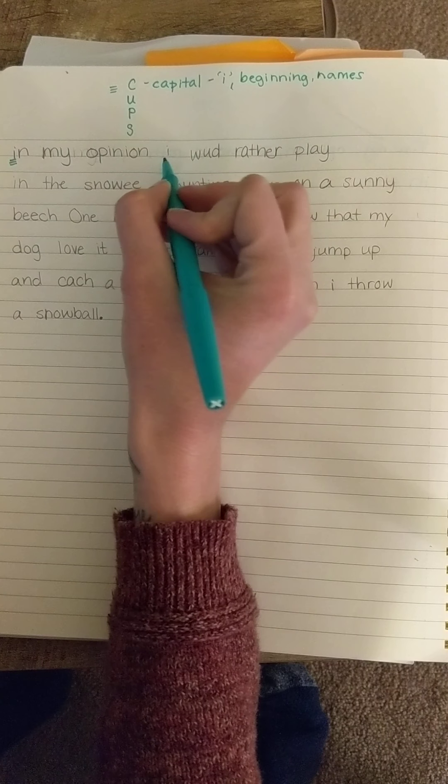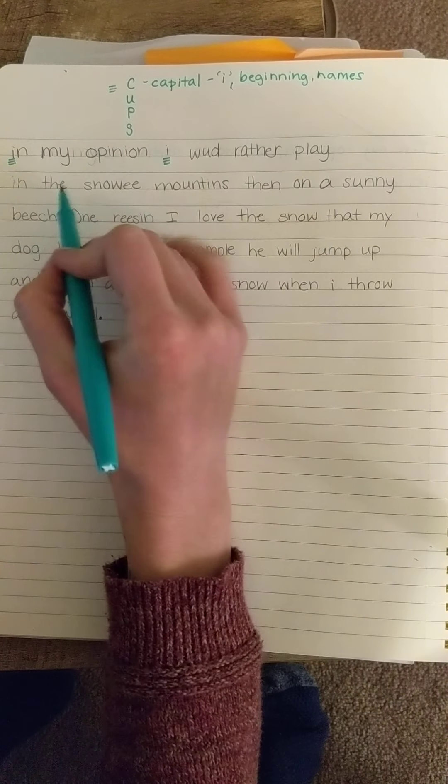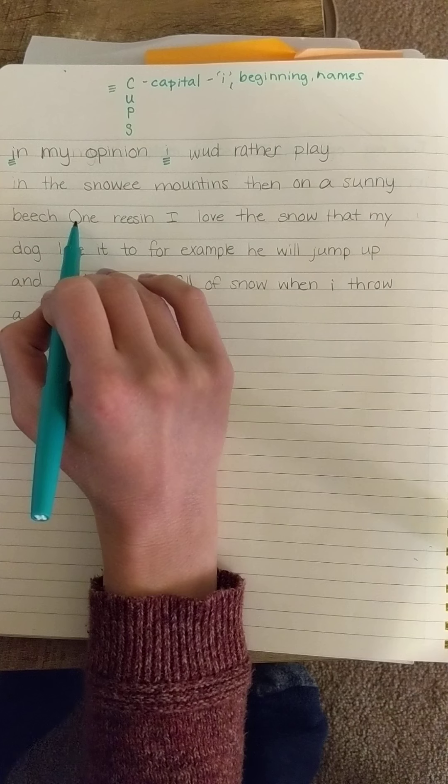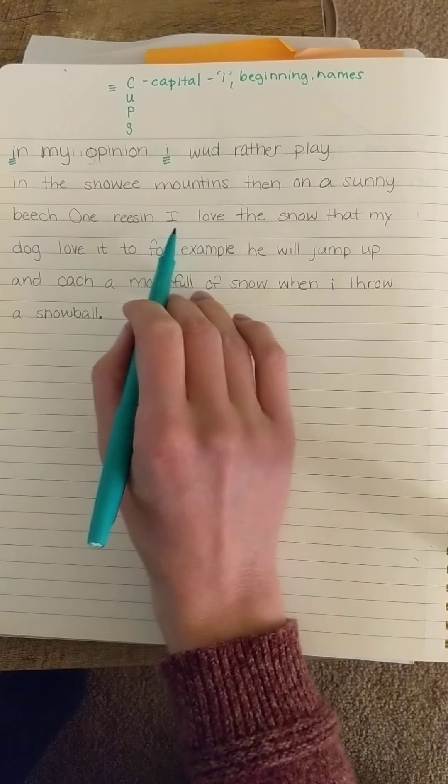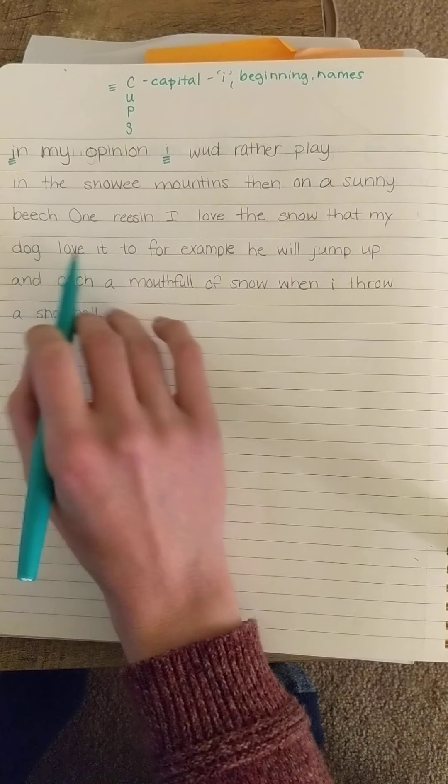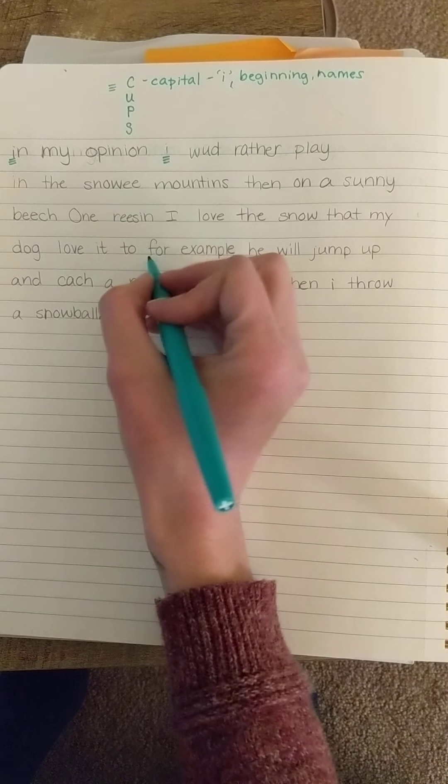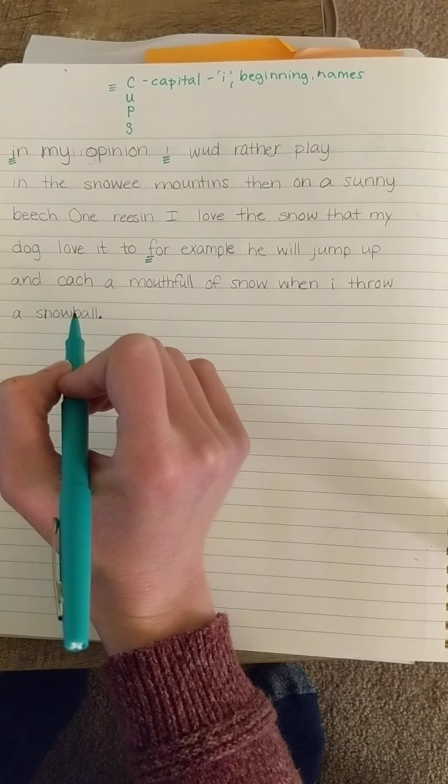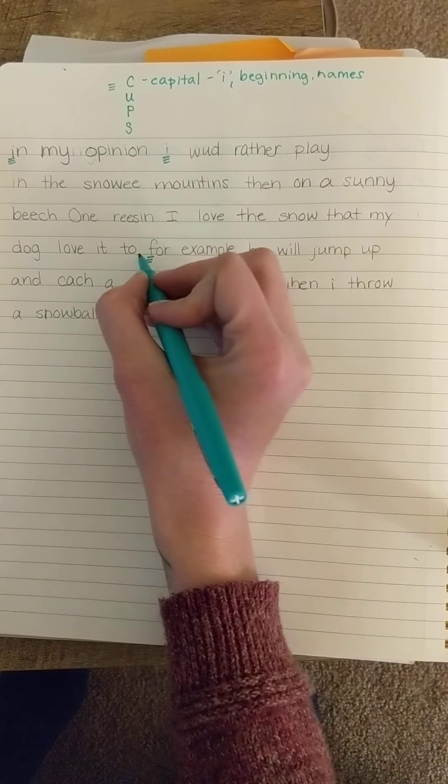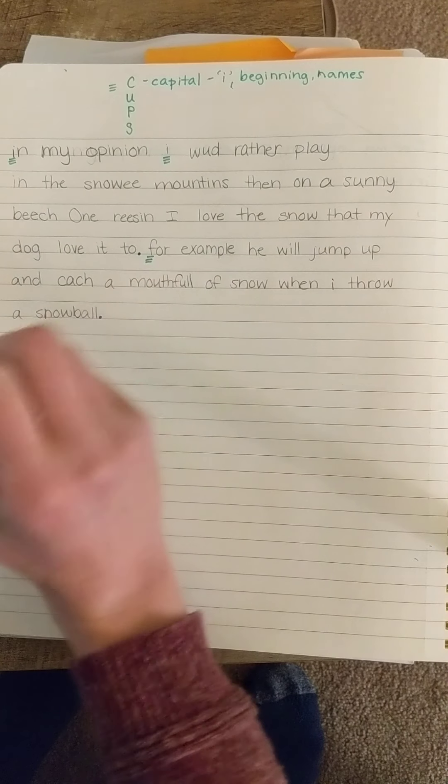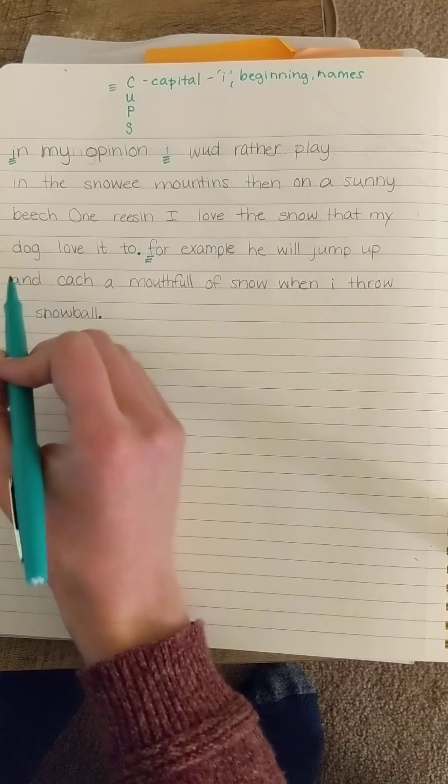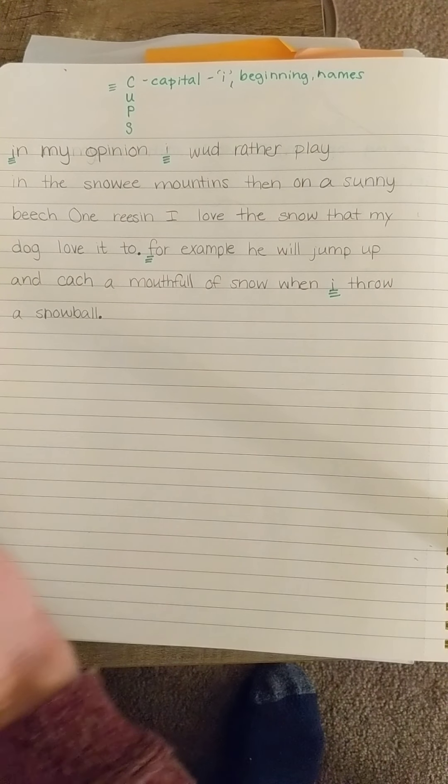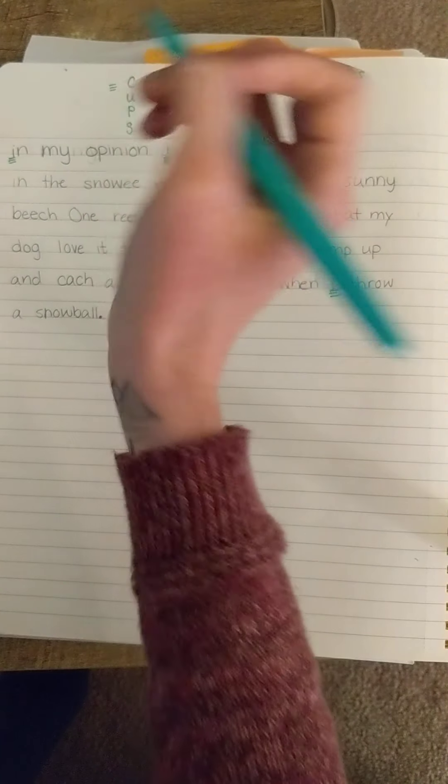In my opinion I, that's I by itself, would rather play in the snowy mountains than on a sunny beach. One reason I, oh that seems like the beginning of my idea, I did a good job with that capital. I love the snow that my dog love it too. For example, it seemed like I was starting my idea right here so I would need to capitalize that because that's the beginning of a sentence. That also helps me notice sometimes we notice that I should have put a punctuation mark there, so I better add that on too. For example, he will jump up and catch a mouthful of snow when I throw a snowball. I think I got it all, my capitals are corrected.